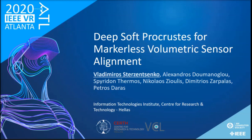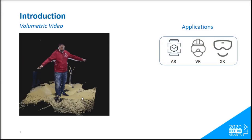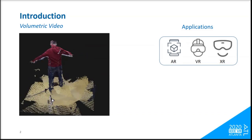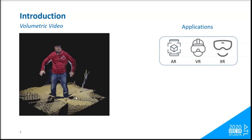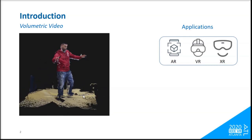This is a presentation about deep soft progress for markerless volumetric sensor alignment. Volumetric video is an emerging multimedia category which grants to its consumers the control over the position and orientation of their viewpoint, which in turn can be viewed on a classical 2D display, 3D display, or even AR, VR goggles.